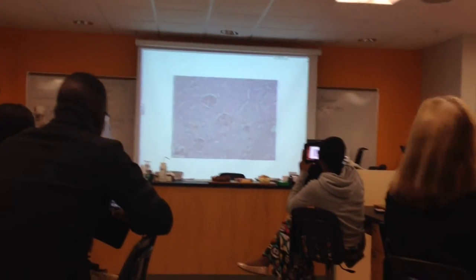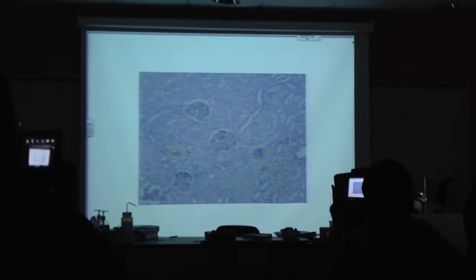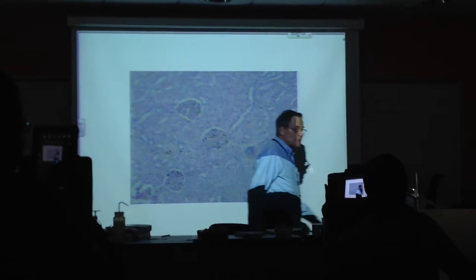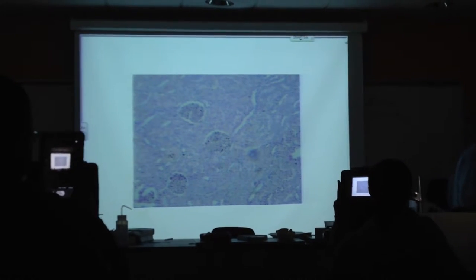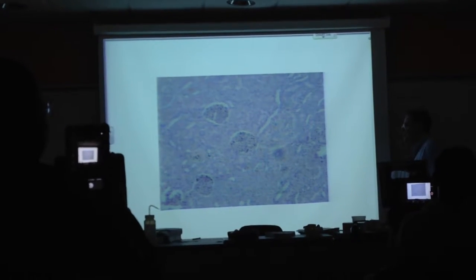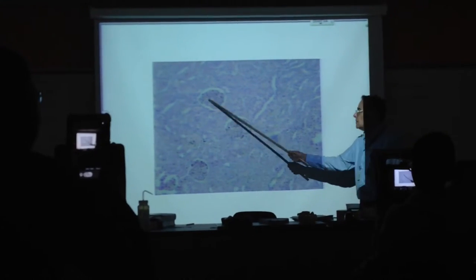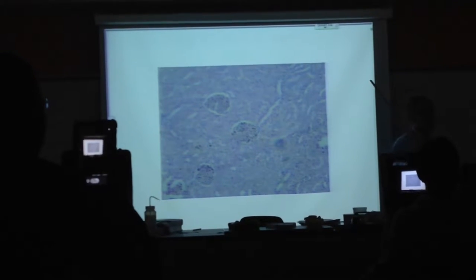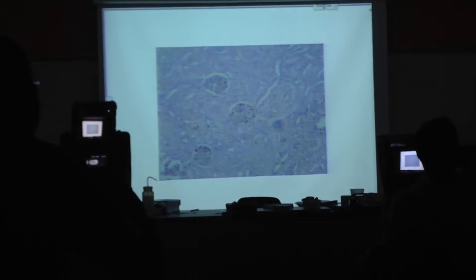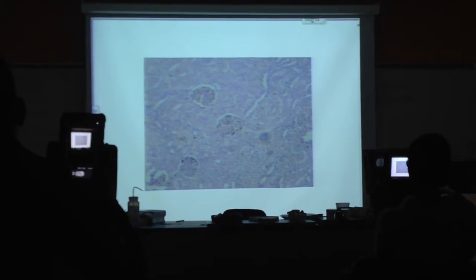First of all, I want you to be able to distinguish on the slides, on the models, the cortex from the medulla. And the cortex, and only the cortex, has these structures, which are renal corpuscles. They're confined to the cortex, and that's what gives the cortex a granular appearance. It presents these spherical structures called renal corpuscles.